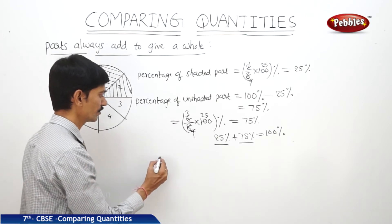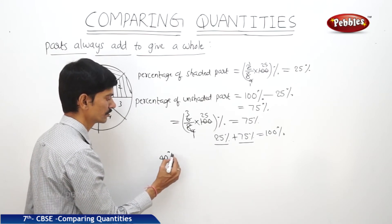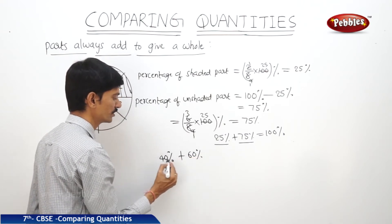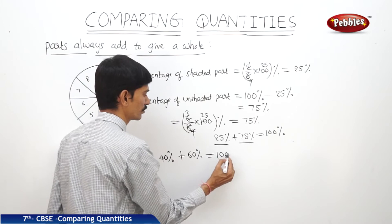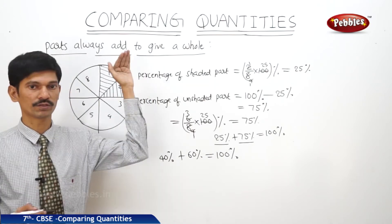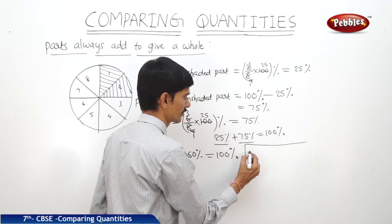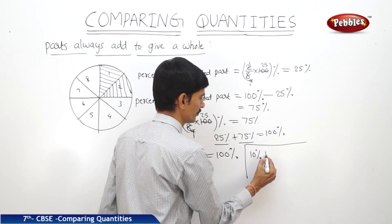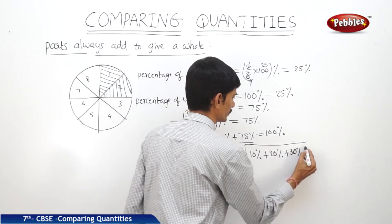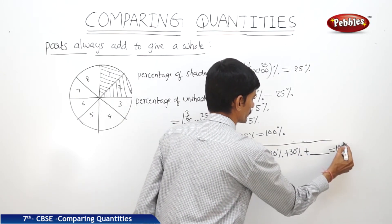For example, in a class there are 40% boys and 60% girls. Then 40% plus 60% equals the total 100%. The parts always add to give the whole. For example, 10% plus 20% plus 30% plus blank equals 100%.